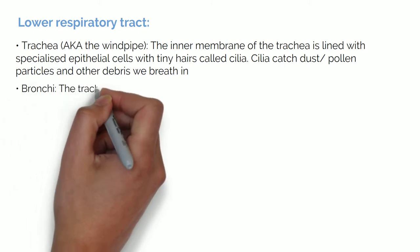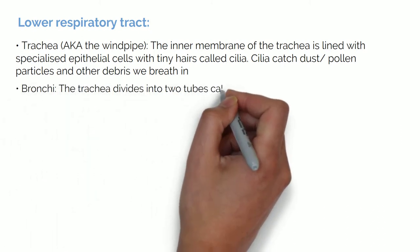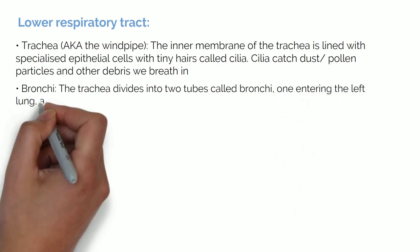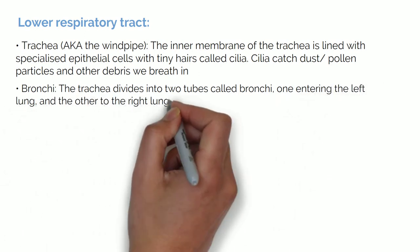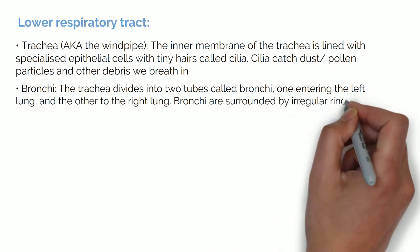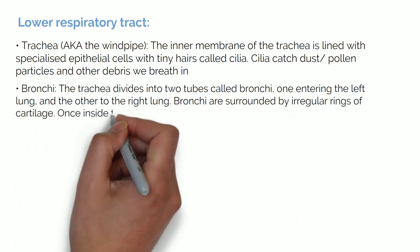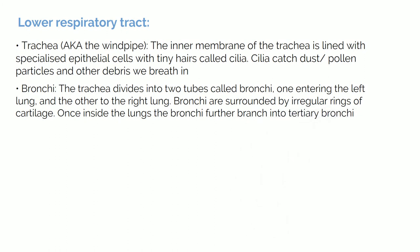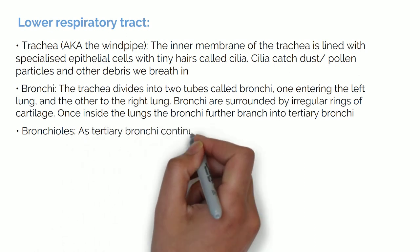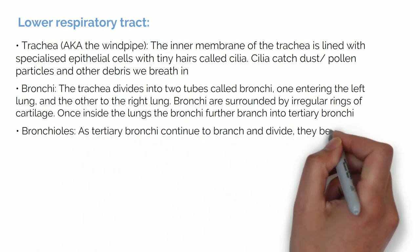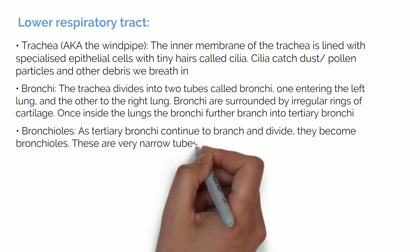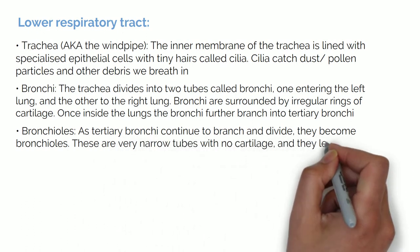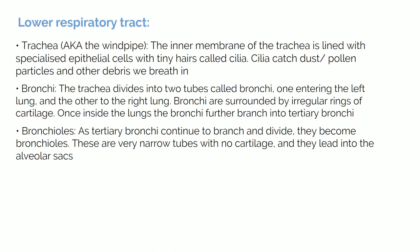The trachea divides into two tubes called bronchi, one entering the left lung and the other the right lung. Bronchi are surrounded by irregular rings of cartilage. Once inside the lungs, the bronchi further branch into tertiary bronchi. As tertiary bronchi continue to branch and divide, they become bronchioles — very narrow tubes less than one millimeter in diameter. There is no cartilage in bronchioles and they lead into the alveolar sacs.